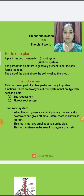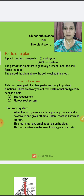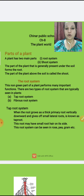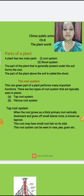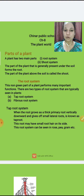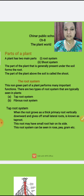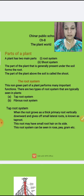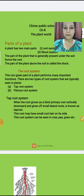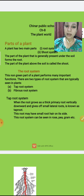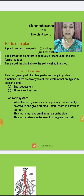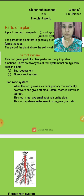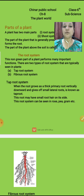The part of the plant which generally grows under the soil is called root, and which grows above the soil is called stem. Jo soil ke under grow karta hai, that is root, aur jo soil ke above grow karta hai, that is shoot. So first we are going to read about the root system.